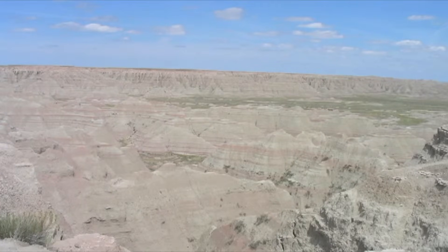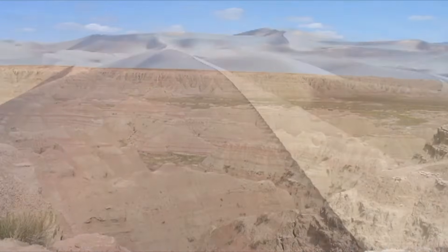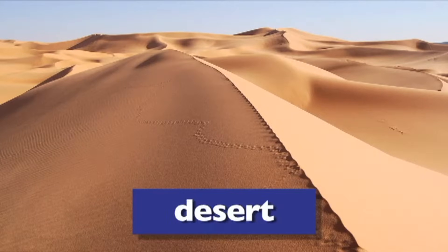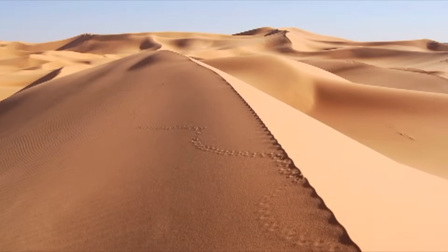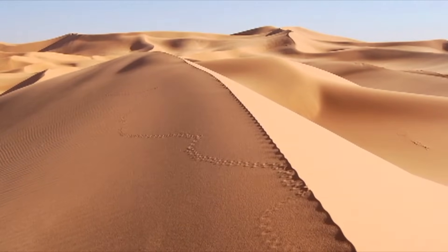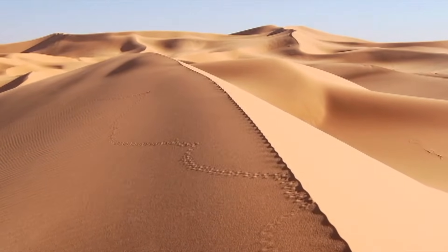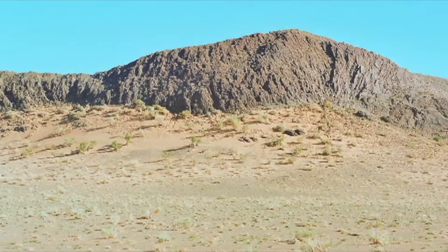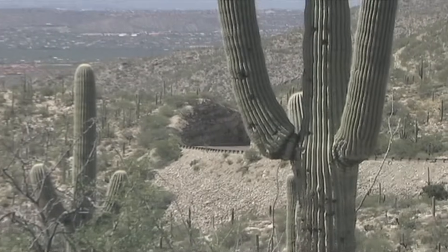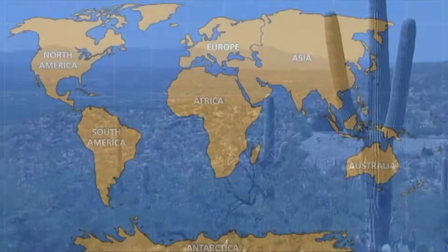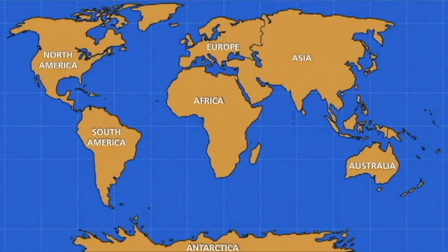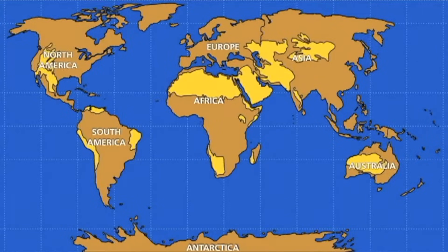Some places on Earth are so dry that even grasses can't grow there. These places are called deserts. When you hear the word desert, you may picture a very hot land filled with piles and piles of sand. But there are also cold, dry deserts too, like the Gobi Desert in Asia. In the desert, you'll find different kinds of plants and animals who have adapted to live there. Deserts are found in North America, parts of South America, Africa, Asia, and Australia.